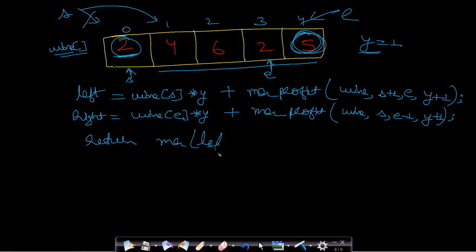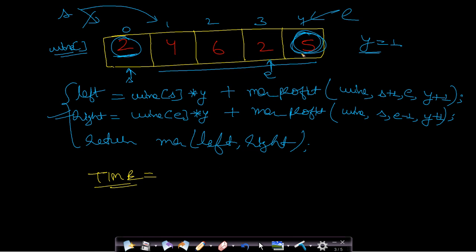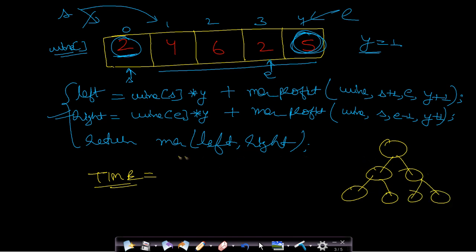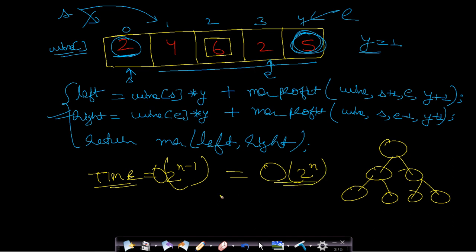This is the three-step recursive process. The time complexity: at each point you make one of two choices, forming a tree structure. The time complexity is O(2^(n−1)) which simplifies to O(2^n) — exponential time. To decrease this, we use the dynamic programming approach.